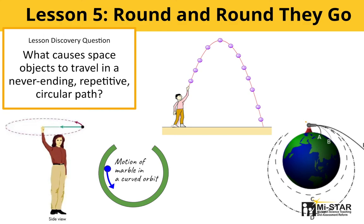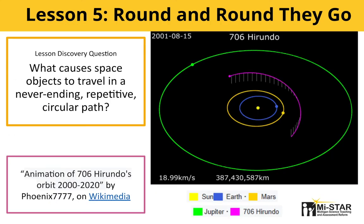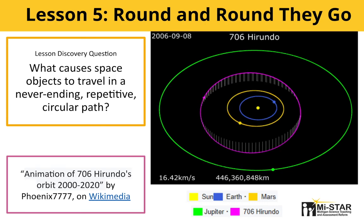In Lesson 5, Round and Round They Go, students observe and use force modeling to investigate four phenomena involving circular motion. They discover that space objects, which stay in motion due to their inertia, travel in relatively circular orbits around other space objects due to gravity. In the connect phase, students make a model to help understand what forces are acting on Earth and on the asteroid to make them orbit the sun continuously in a circle.